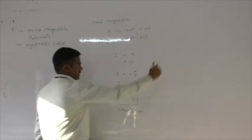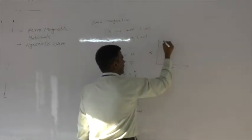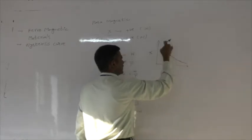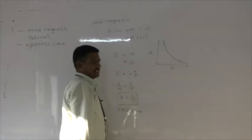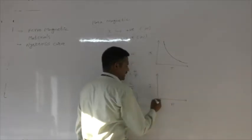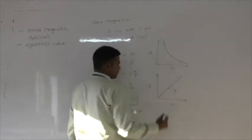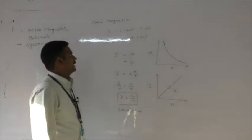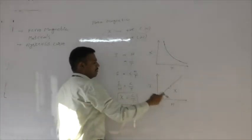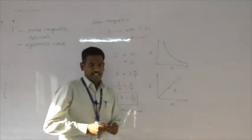This is called Curie's law: the magnetic susceptibility of a paramagnetic material is inversely proportional to temperature. If we plot temperature versus magnetic susceptibility, the graph is a rectangular hyperbola. If we plot intensity of magnetization versus field intensity for a paramagnetic material, it is a straight line whose slope gives the magnetic susceptibility.